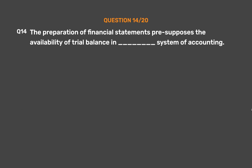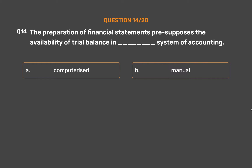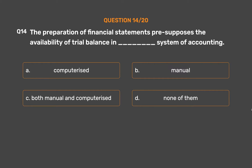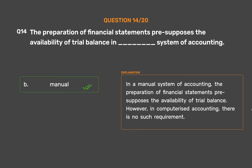Question number 14. The preparation of financial statements presupposes the availability of trial balance in underscore system of accounting. Option A: Computerized. Option B: Manual. Option C: Both manual and computerized. Option D: None of them. The correct answer is Option B — Manual. In a manual system of accounting, the preparation of financial statements presupposes the availability of trial balance. However, in computerized accounting, there is no such requirement.